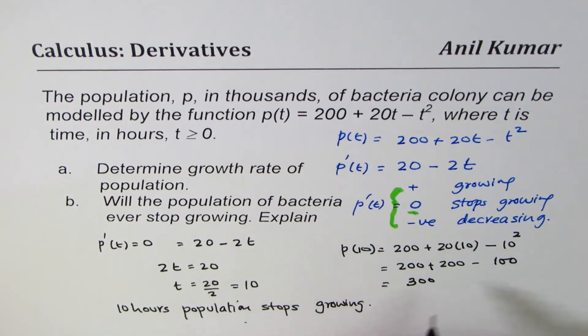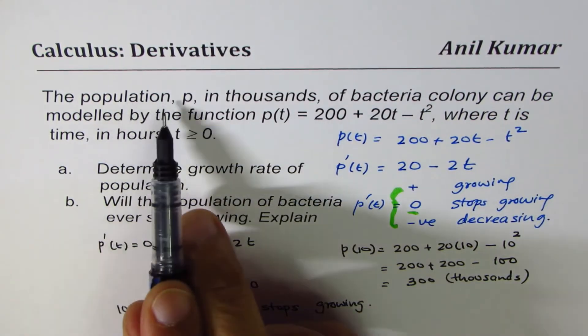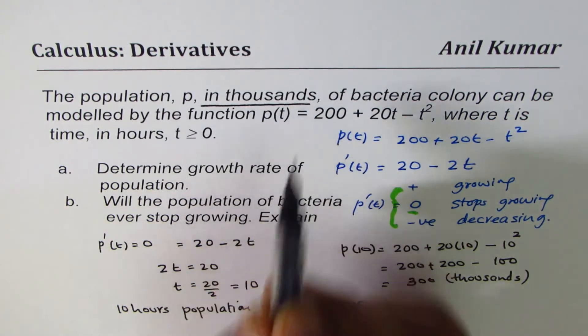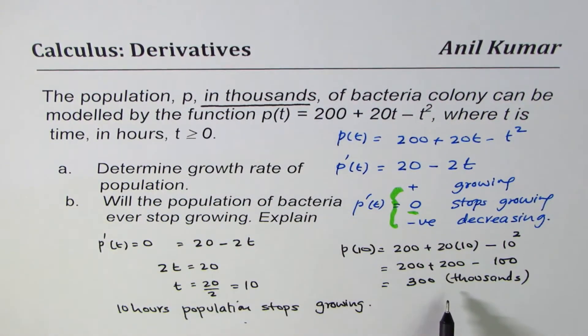So P(t) is 300, and this is in thousands. Remember that part, population P is in thousands. So the population of bacteria when t is 10 hours is 300,000. That's the answer: 300,000 is the population when the rate of growth is zero, when the population growth is stopped.